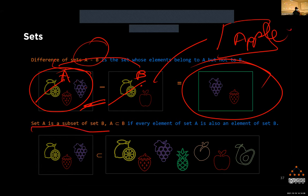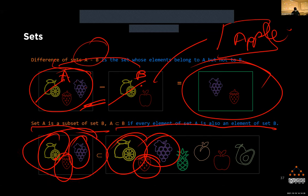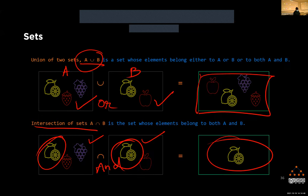Set A is a subset of B if every element of A is also in B. In this example, lemon, strawberry, and grapes are all in the other set, so this set is a subset. But if we added another fruit, it would no longer be a subset. We denote that using the not-subset notation. For union we use the ∪ symbol, for intersection ∩, and for subset the ⊆ notation.